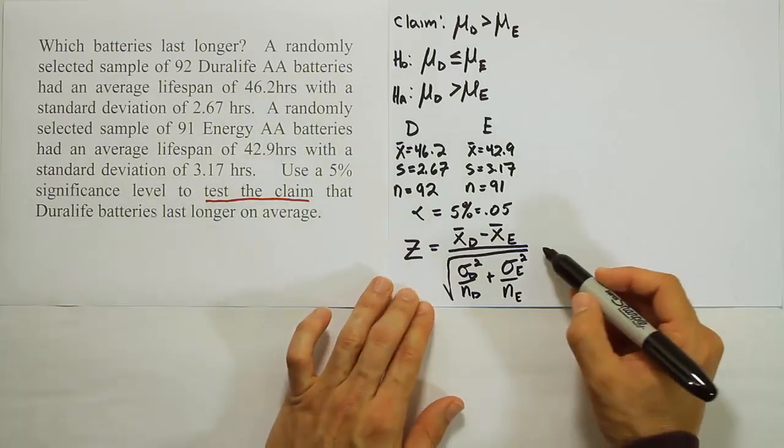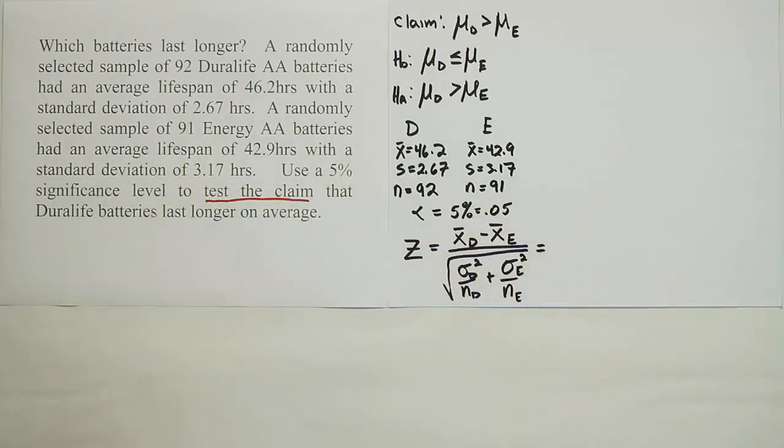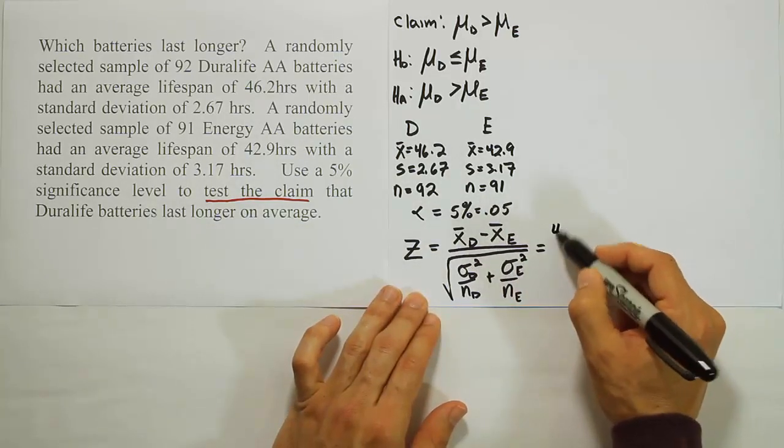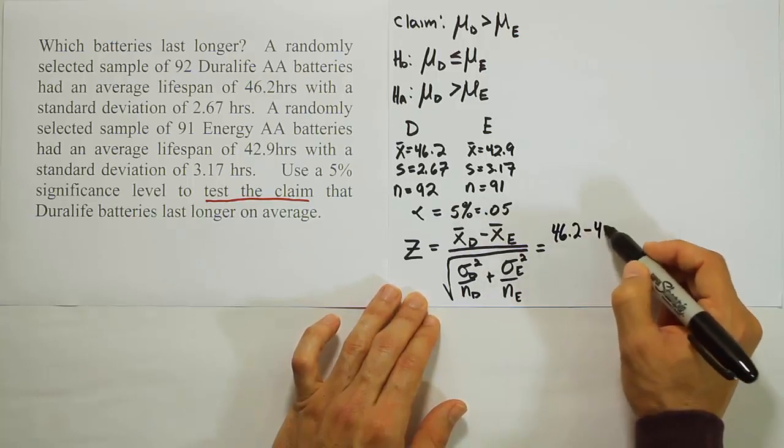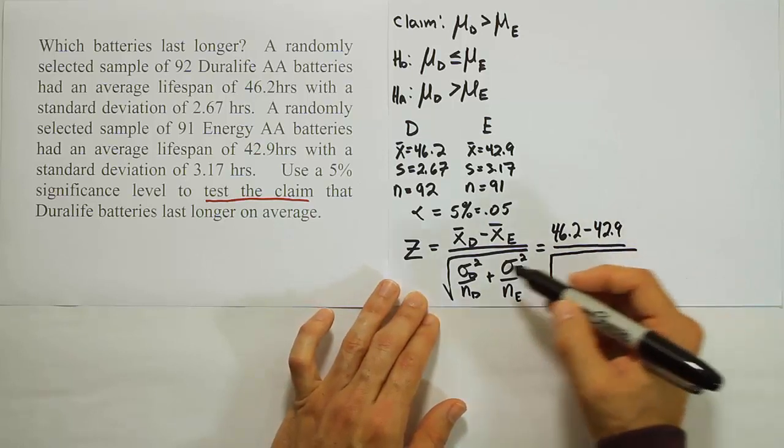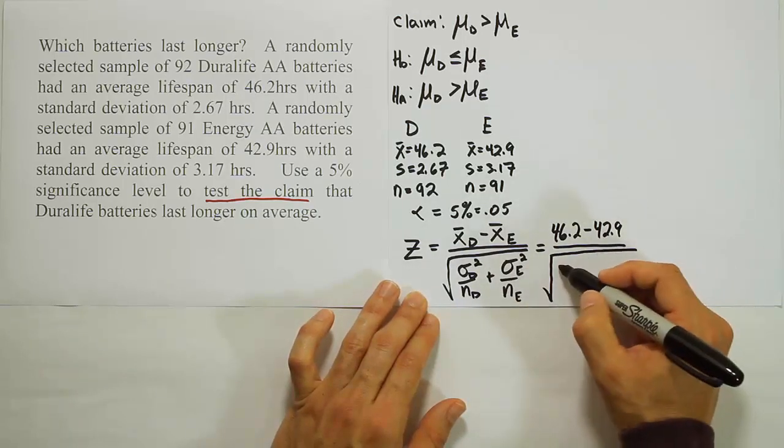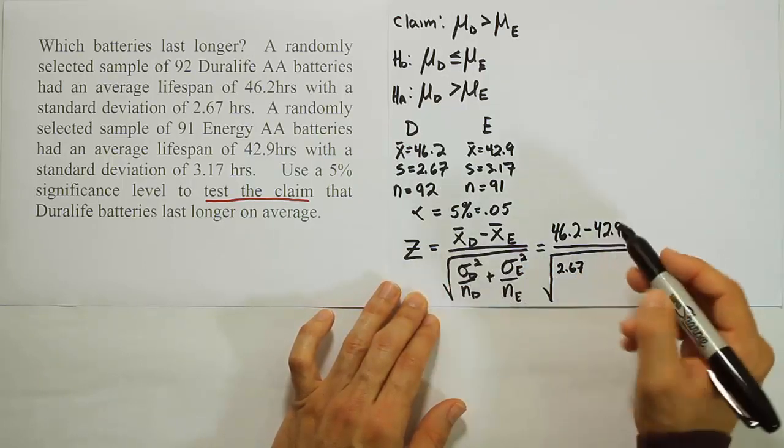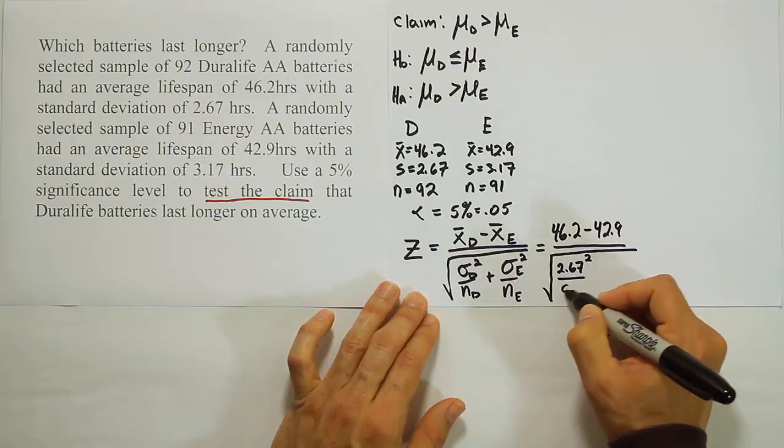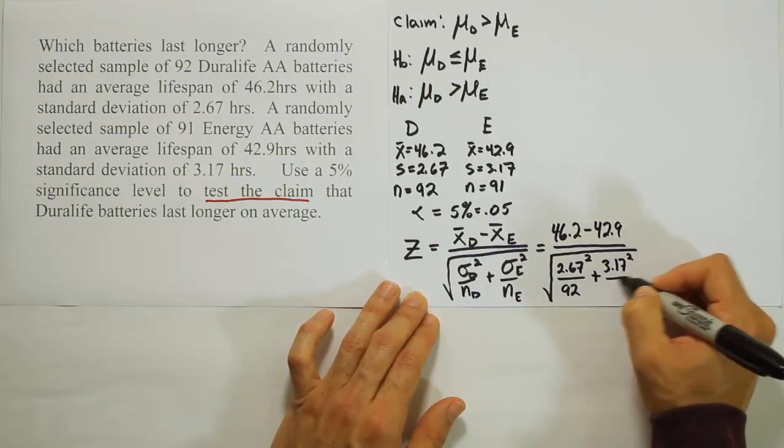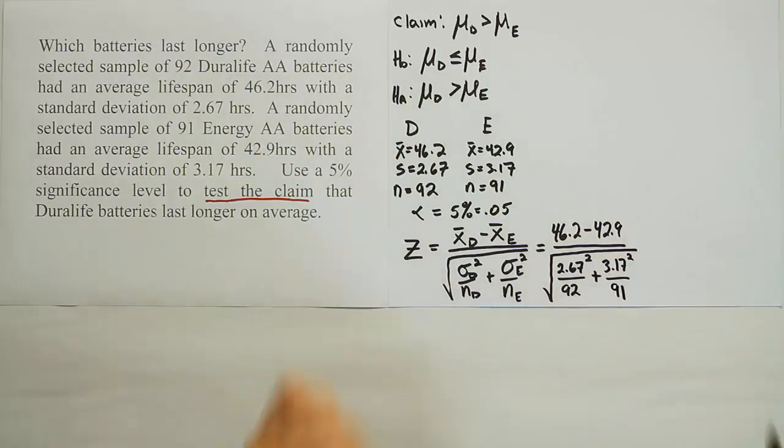Now let's plug in the information to complete our formula. For the x-bar D, we're going to have 46.2 minus 42.9 over the square root of, the standard deviation is 2.67. Remember we're using the sample value to replace the population value. Then we need to square that and divide by 92 plus 3.17 squared divided by 91. Now that gives us our answer. We just have to work that out with our calculator.